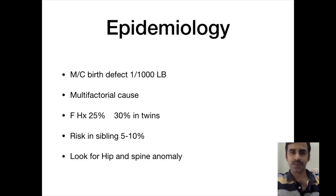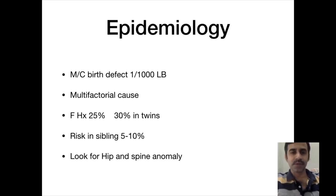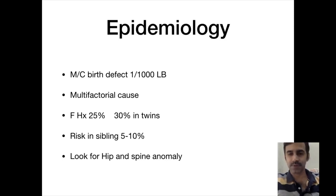Now we can go into the details of club foot. It is the most common birth defect, seen in one per thousand live births. It has multifactorial causation. A family history is seen in 25% of patients, and it is 30% in the case of twins. For siblings, it is 5 to 10%. Always look for hip and spine deformities in patients with club foot.